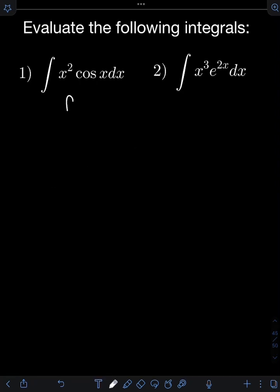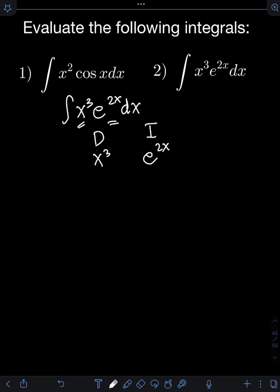For number 2, we have the integral of x cubed e raised to 2x dx. Again using the DI method, we choose the function to be differentiated and integrated first. I'll use x cubed for the function to be differentiated and e raised to 2x for the function to be integrated. Let's put the alternating sign conventions at the side.